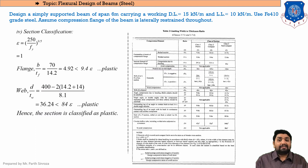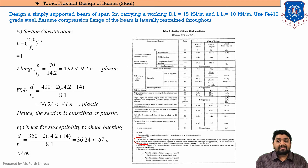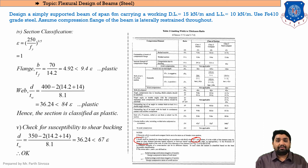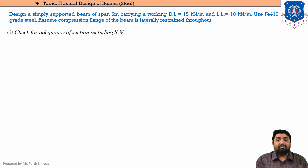Next is the check for susceptibility to shear buckling, from note 3 of the classification table. The condition requires D/TW ≤ 67ε. Our value of 36.24 is less than 67ε, so the section is not susceptible to shear buckling — this check is satisfied.